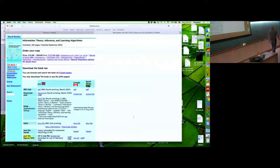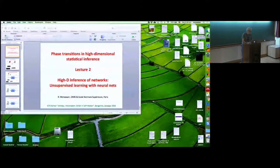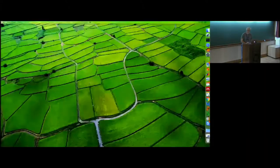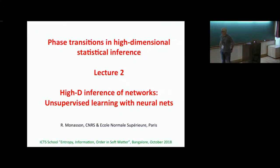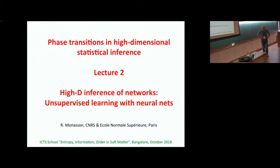Today I go beyond what we talked about last Monday. I'm going to talk about unsupervised learning — this is the second lecture about high-dimensional inference in networks and unsupervised learning with neural nets, which is a set of techniques developing very fast right now. You've probably heard about deep learning and many of its applications, but I think it's important to know a little about shallow learning before going to deep learning.